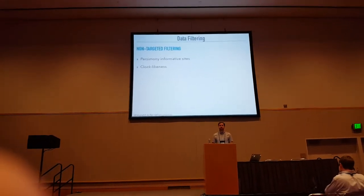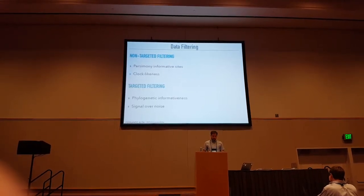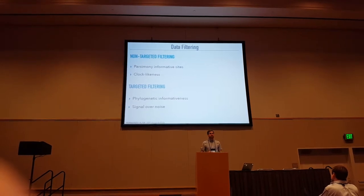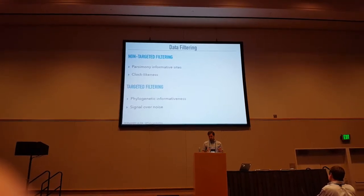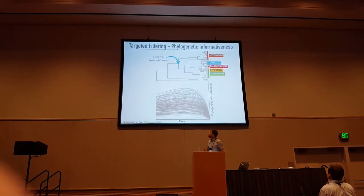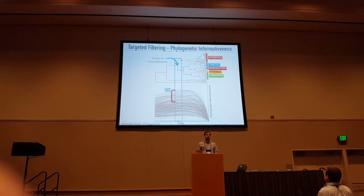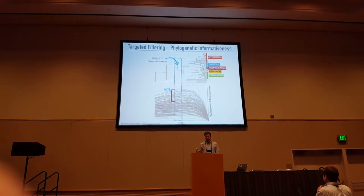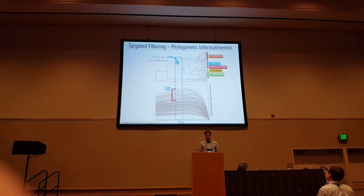I decided to compare different data filtering strategies. Some were commonly used in the literature. I also used another approach which I call target filtering, where I look at loci that will particularly affect the nodes I'm interested in — specifically the origin of the Gymnoliforms — selecting a fraction of the loci with higher phylogenetic informativeness for that specific region of the tree.